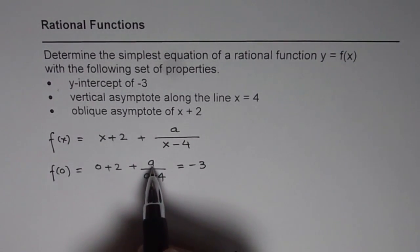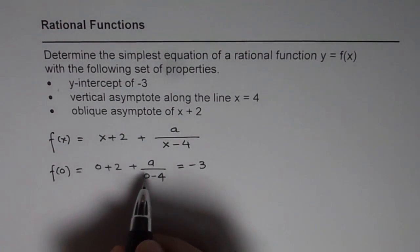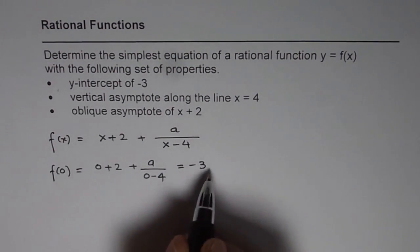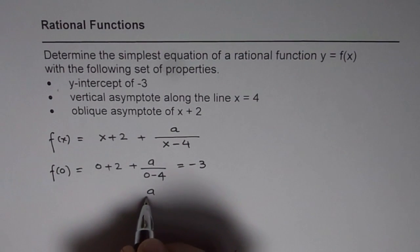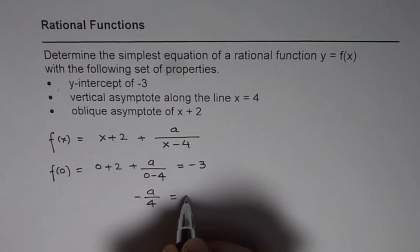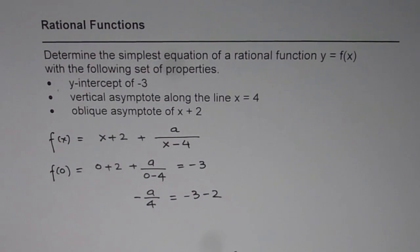So we can solve for a from here. We can take 2 on this side, so we get a over -4 is equal to -3 - 2.